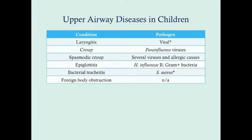This is a list of upper airway diseases we're talking about. Spasmodic croup can be caused by any of several viruses, sharing many of the same viruses that cause traditional viral croup. However, there are also allergic causes behind spasmodic croup, and reflux disease can cause a spasmodic croup as well.